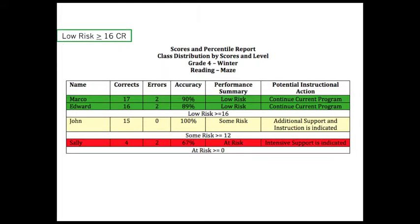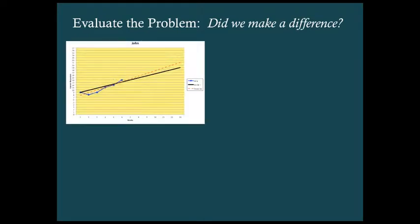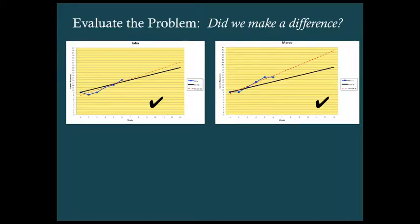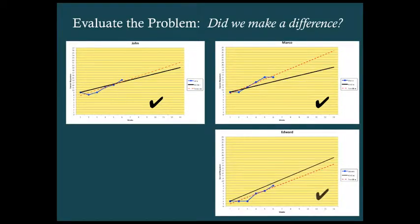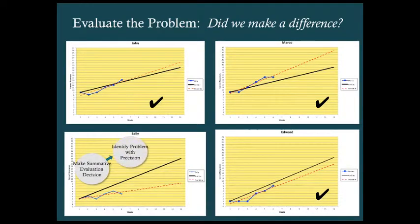Let's look more closely at our students. When we look at Marco, Edward, and John, we've seen notable progress. Sally is still lagging quite a bit behind. Looking at individual progress monitoring graphs and inspecting the data in relationship to the aim line and the trend line, we're seeing positive outcomes for those three students. However, for Sally, results are much less positive. In fact, for Sally, we may need to process through the problem-solving process again to make sure we've either identified the problem correctly or put the most appropriate solutions in place.